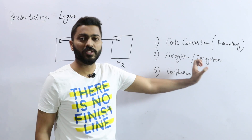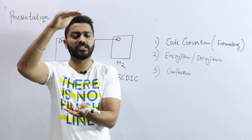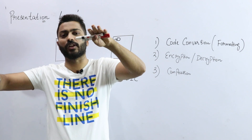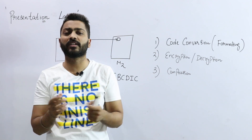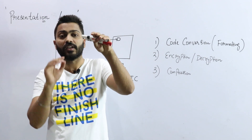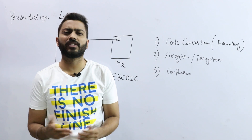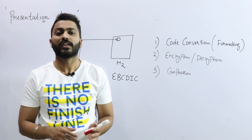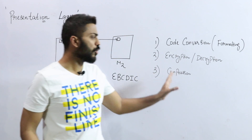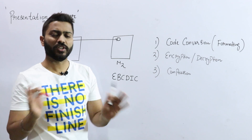That is called encryption and decryption, and this is the responsibility of the Presentation layer. The third responsibility is compression of data. Sometimes in our data there are many bits which are redundant; we can compress those values, although it is a little tricky. So that is called data compression. This is all about the functionality of the Presentation layer.